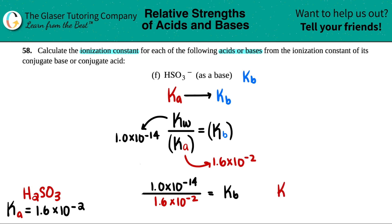So KB, we want that in blue. Blue for base. KB equals 6.3 if we're doing 2 sig figs, times 10 to the negative 13th. And that is the final answer.